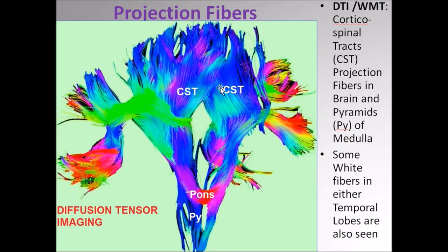This is another picture — a DTI, diffusion tensor imaging with white matter tractography of the projection fibers. More specifically, one component of the projection fibers inside the internal capsule, which we shall describe, is referred to as the corticospinal tract. This is one side corticospinal tract descending through the pons into the medullary pyramids, and this is the other corticospinal tract.